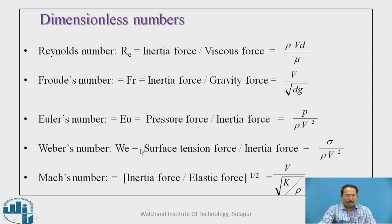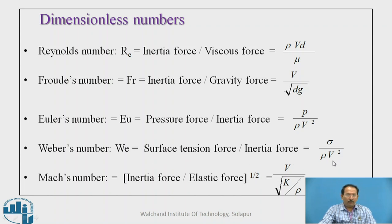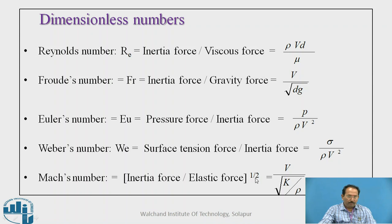Weber's number applies where surface tension force is the predominating force. It is the ratio of surface tension force to inertia force: We = σ / (ρV²). Finally, Mach number is the ratio of inertia force to elastic force raised to the half power: M = V / √(K/ρ).